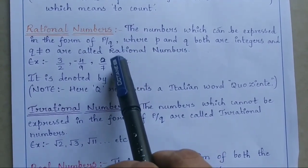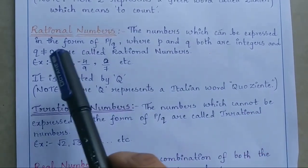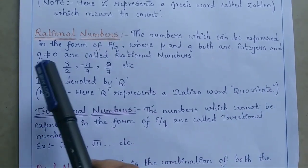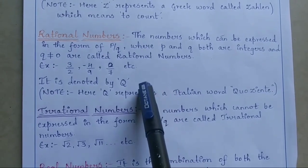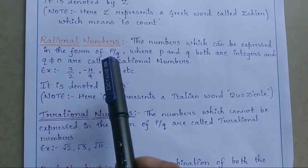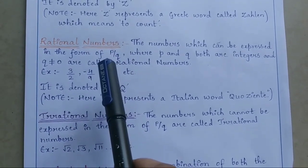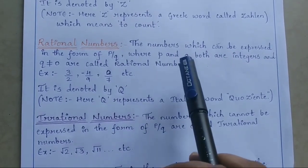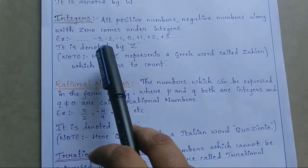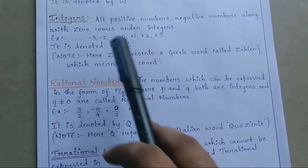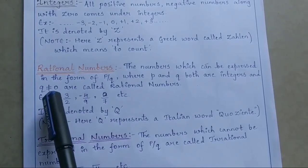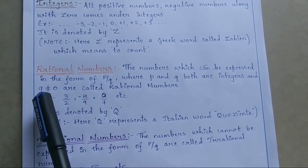A number which can be expressed in the form of p/q, where p and q are both integers and q is not equal to 0, is called a rational number. There are three conditions: first, the number must be in the form of p/q; second, both p and q must be integers — meaning either negative, positive, or 0; third, q must not be equal to 0.